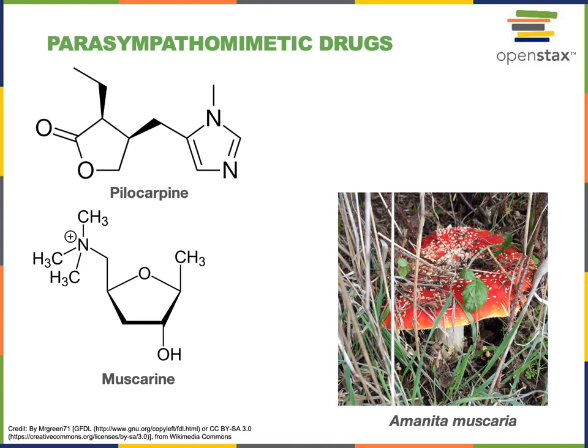There is some muscarin in Amanita muscaria, and it was initially thought that muscarin toxicity was the reason that Amanita muscaria is a toxic mushroom. Later, we've learned that it's a different toxin that really causes the symptoms of Amanita muscaria poisoning. Nevertheless, the mushroom got its name from the fact that it does contain muscarin, which is another example of a muscarinic acetylcholine receptor agonist that can function as a parasympathomimetic drug, having the effects of constricting the pupils.